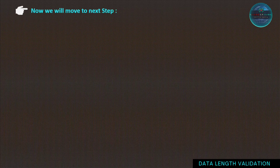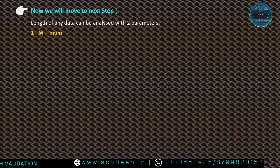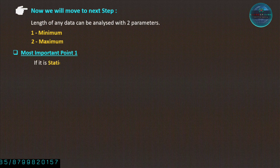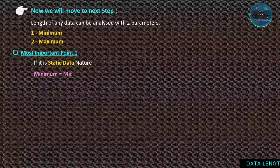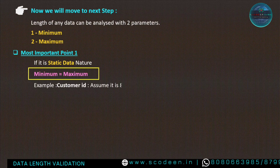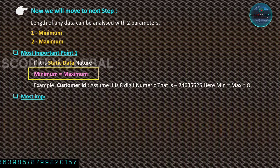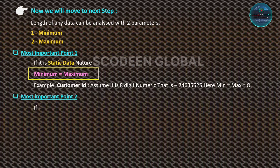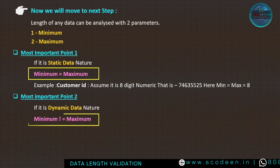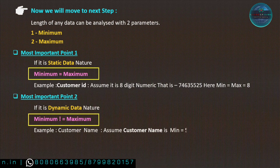The length of any data can be analyzed with two parameters: minimum and maximum. We have to identify the minimum and maximum with respect to the business logic. The most important point is: if the data is static by nature, the minimum will be equal to maximum. For example, customer ID — assume it is 8 digits numeric — that means minimum is equal to 8 and maximum is equal to 8.